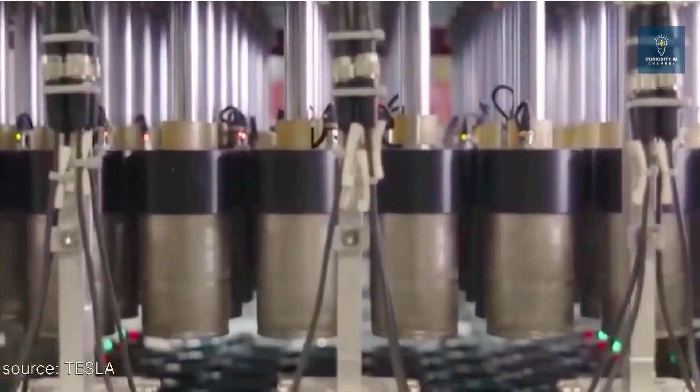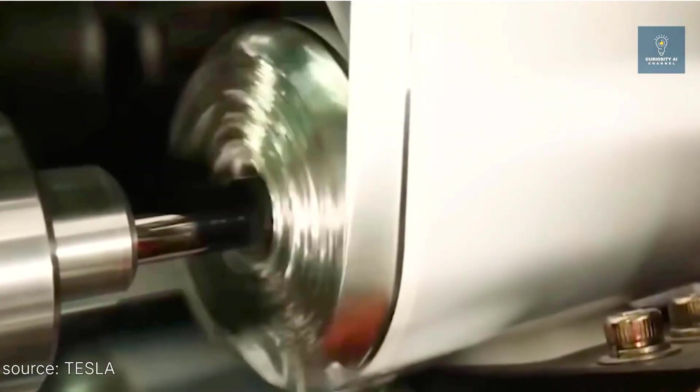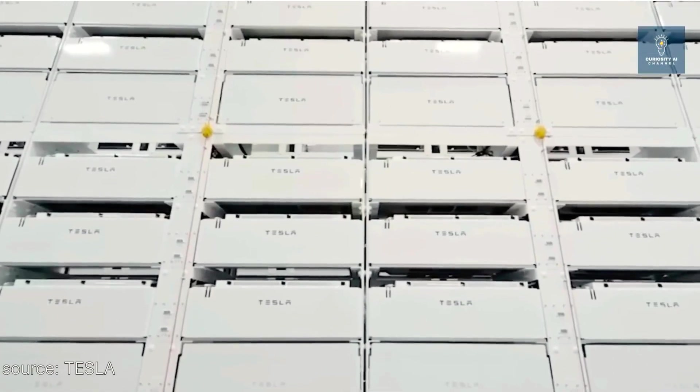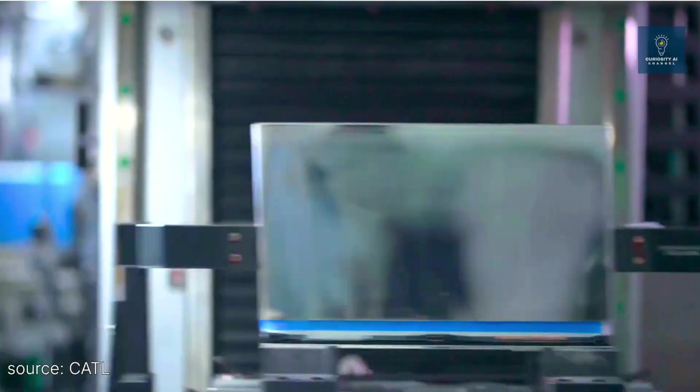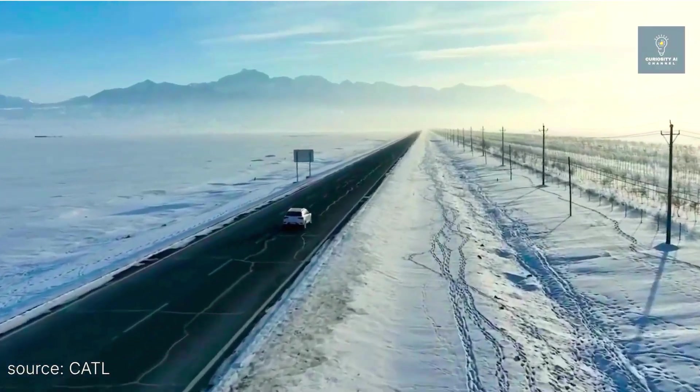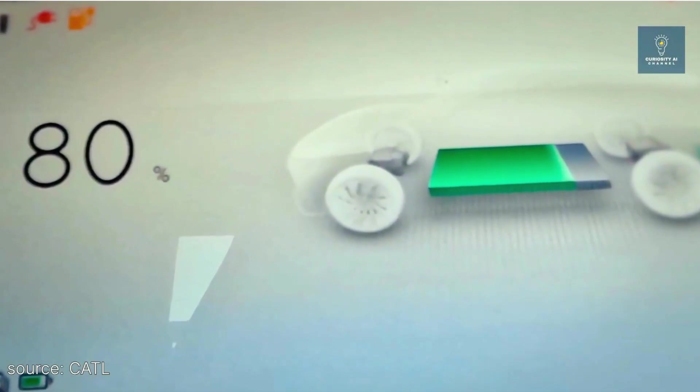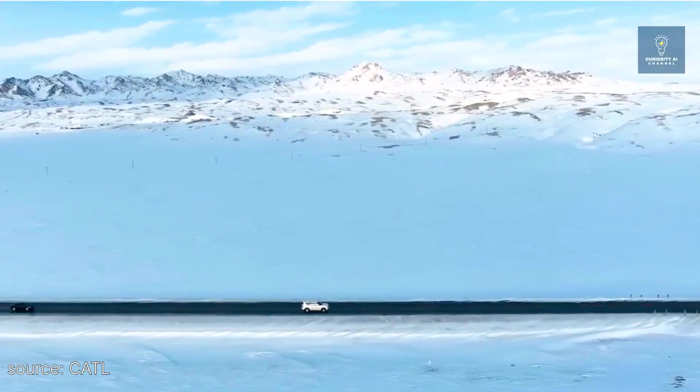Let me put those numbers in context. Tesla's current LFP batteries typically last 3,000 to 4,000 charge cycles before dropping below 80% capacity. If CATL's 10,000-cycle claim proves accurate, we're talking about a battery that could theoretically power a vehicle for millions of miles before significant degradation.